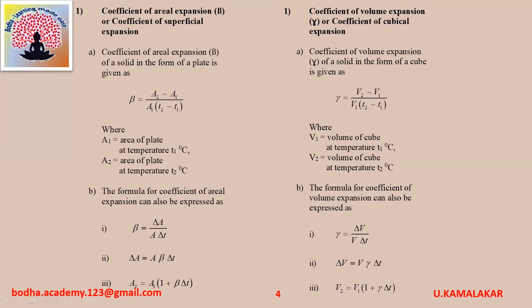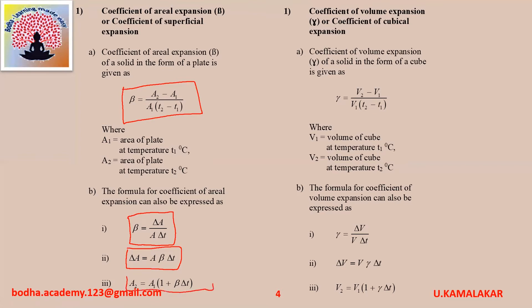Coefficient of aerial expansion or coefficient of superficial expansion: the coefficient of aerial expansion of a solid in the form of a plate is given as beta equals (A2 minus A1) divided by (A1 into T2 minus T1), where A1 is area of plate at temperature T1°C and A2 is area of plate at temperature T2°C. It can also be expressed as beta equals delta A divided by (A into delta T), or delta A equals A beta delta T, or A2 equals A1 into (1 plus beta into delta T).